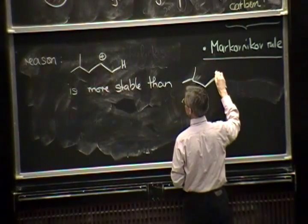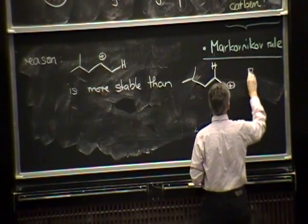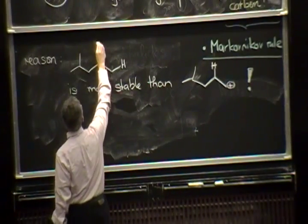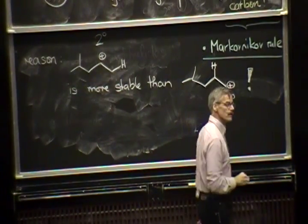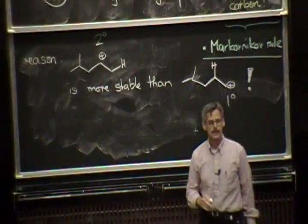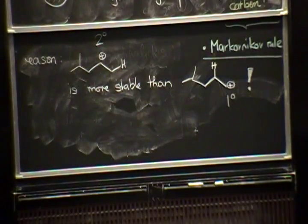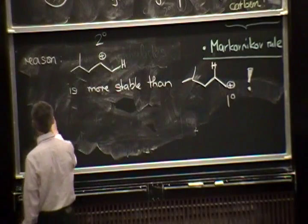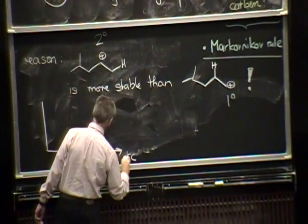Which is what we would obtain if the hydrogen is added at this position. So, secondary carbocation versus primary carbocation. If you reverse the regiochemistry in the protonation, you end up with the primary carbocation and that is less stable. So, again, if you look at the energy diagram, we would obviously prefer the formation of the more stable carbocation.